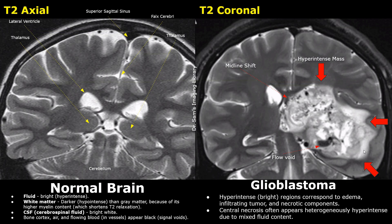Edema is also noted and usually appears more homogeneous than the mass. Due to this homogeneity, we are able to distinguish it from the mass. Ventricular compression and midline shift are also noted.